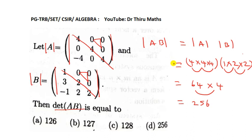So, determinant of AB equals 256. Option D.